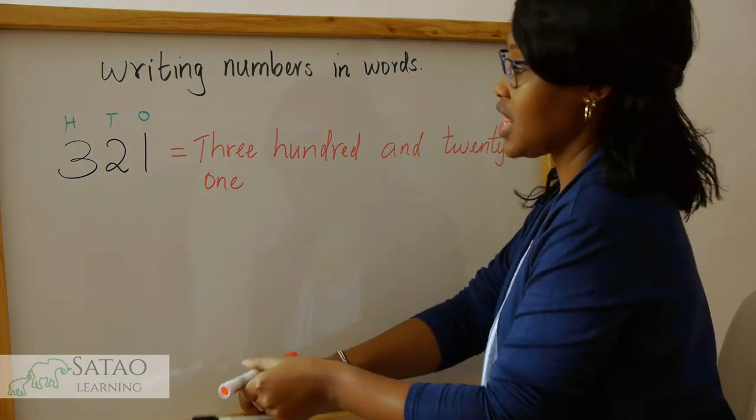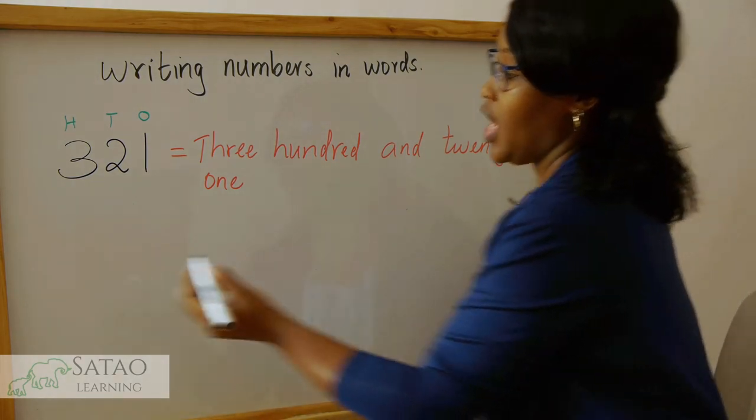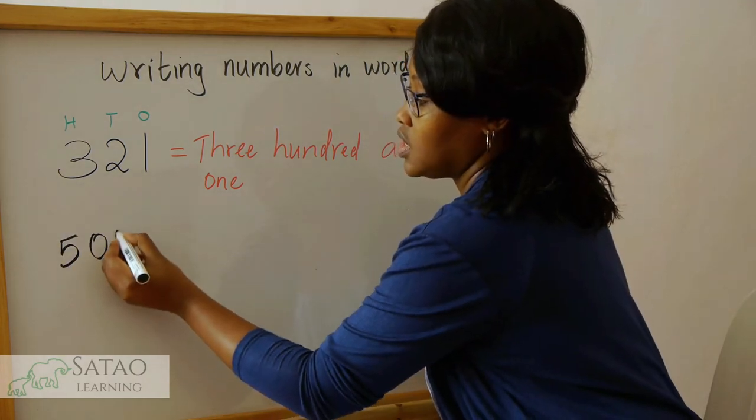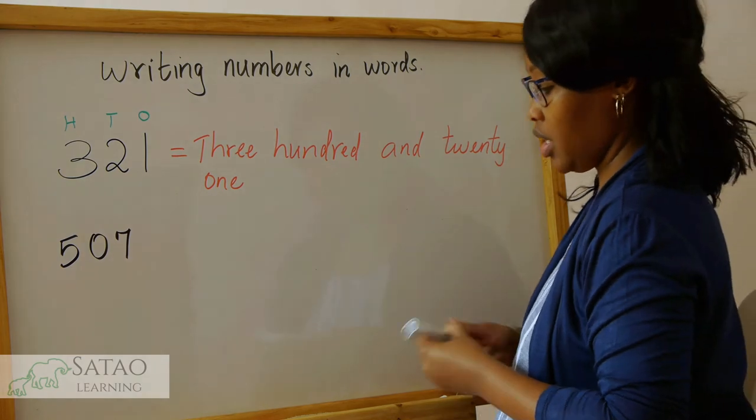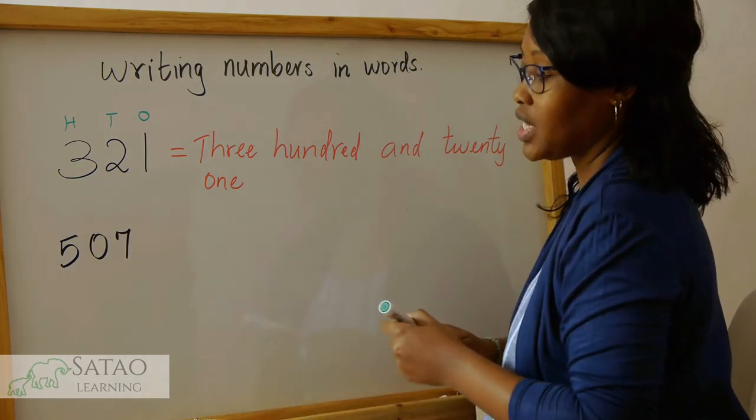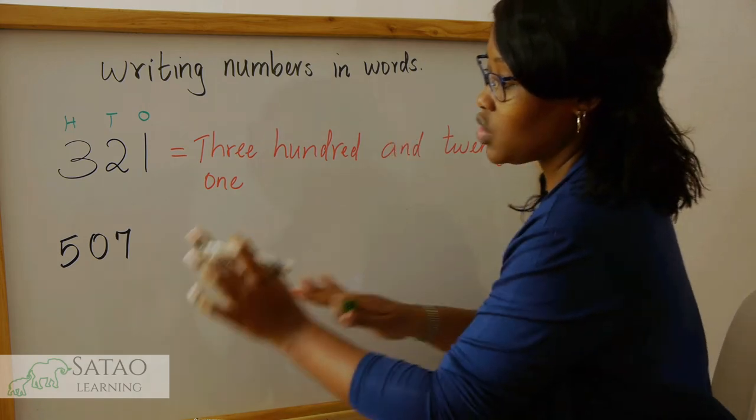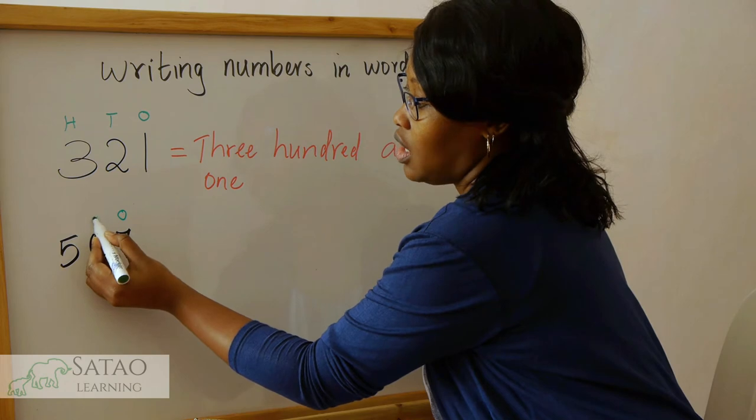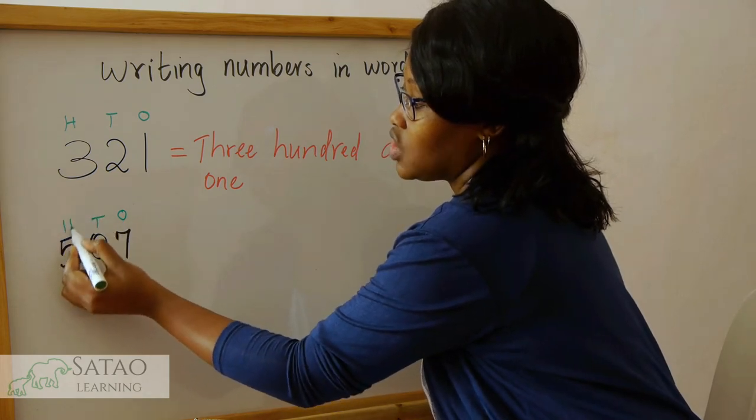Let's think about another number. Let's say we have 507. Okay, so what do we do? Again, think about the place values, think about where each number lies: ones, tens, and hundreds.